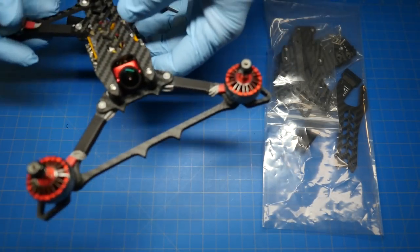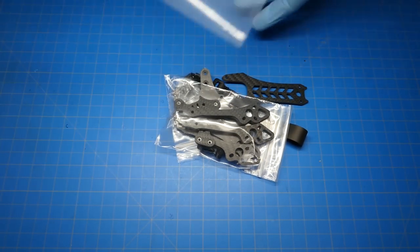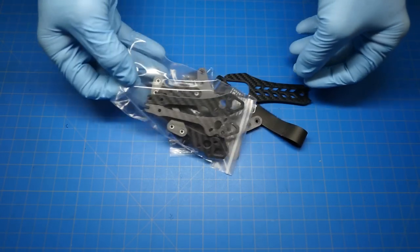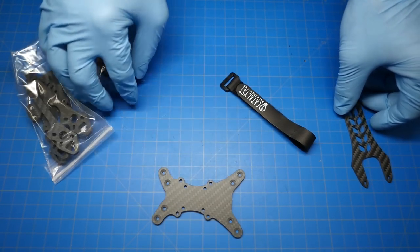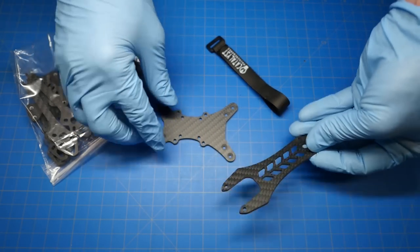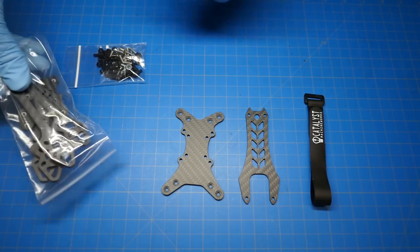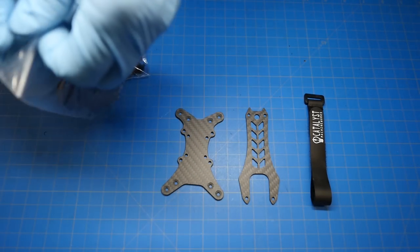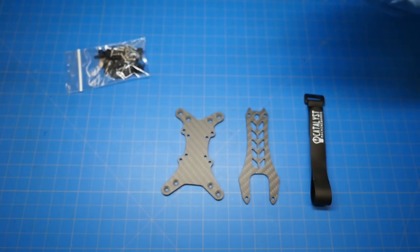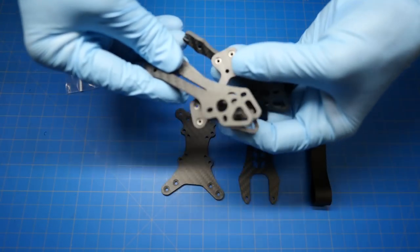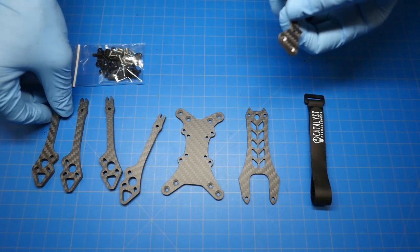Let's go ahead and see what's going to come in your kit. We've got the bottom plate, the top plate, the Velcro strap, and it's going to come with 4 arms, obviously.